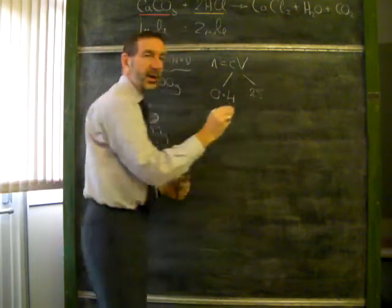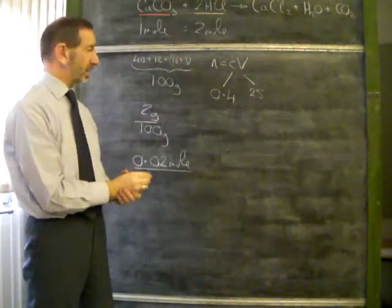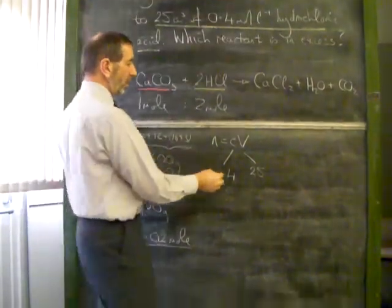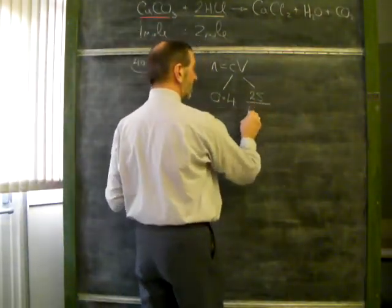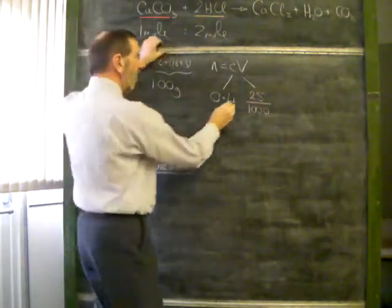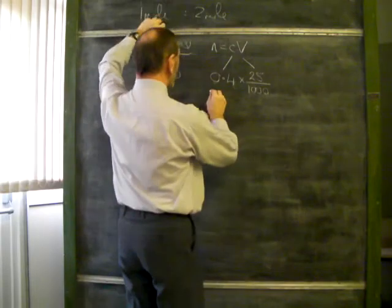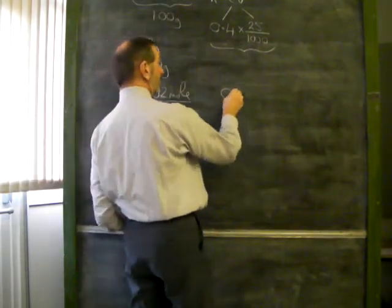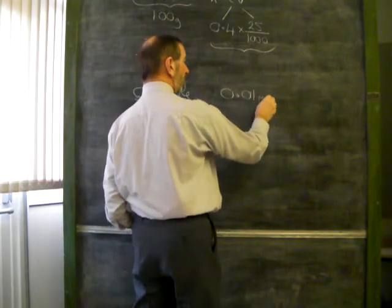So the concentration of acid is 0.4, and the volume is 25. Ah, but never forget, the volume must be in liters. We're talking here about moles per liter. So 25 cubic centimeters divided by 1,000 converts to liters. When we do this sum, 0.4 times 25 divided by 1,000, this comes to 0.01 of a mole.